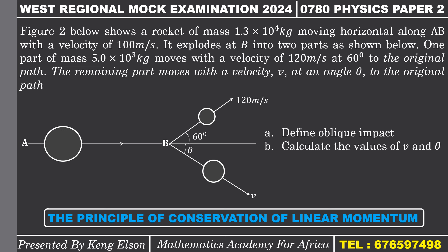The question reads: Figure 2 below shows a rocket of mass 1.3 × 10⁴ kilograms moving horizontally along AB with a velocity of 100 meters per second. It explodes at B into two parts. One part of mass 5.0 × 10³ kilograms moves with a velocity of 120 meters per second at 60 degrees to the original path. The remaining part moves with a velocity v at an angle theta to the original path.